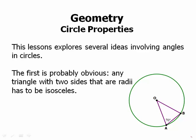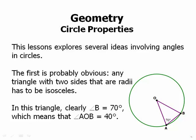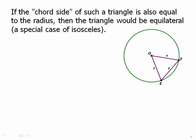Because the sides are equal, the angles have to be equal. So if we have an angle of 70 degrees at A, we have to have an angle of 70 degrees at B, which leaves 40 degrees for the angle at O. If the chord side of such a triangle is also equal to the radius, then the triangle would be equilateral, which is a special case of isosceles. So if chord EF also has a length of R in addition to the two radii, we immediately know we have an equilateral triangle with three 60-degree angles.